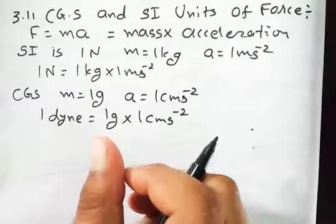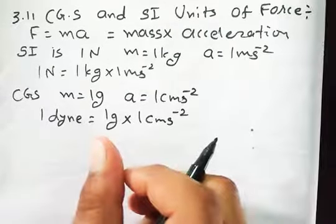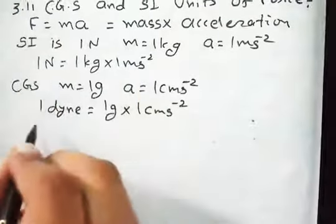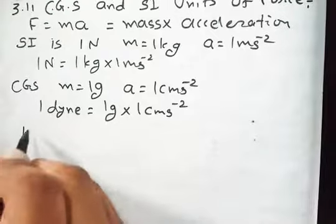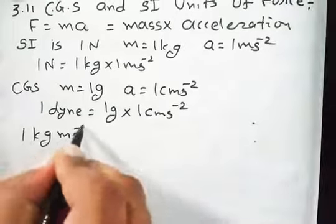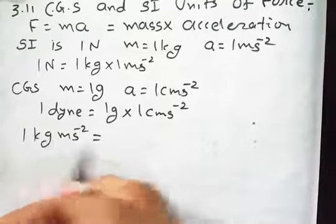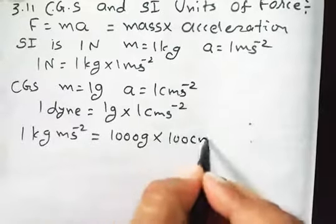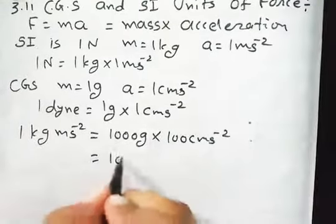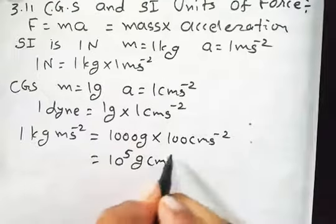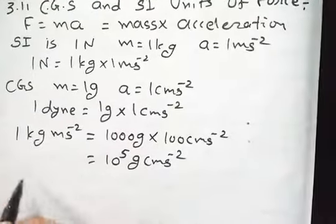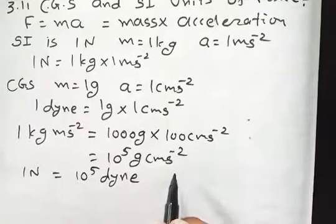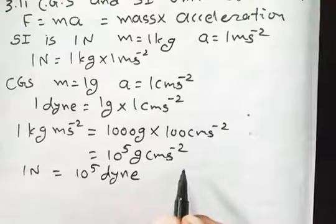Now we are converting the SI units into CGS. We know that in SI, one kilogram meter per second squared equals—I am converting—one kilogram into 1,000 grams and one meter into 100 centimeters per second squared. This equals 10 to the power 5 gram centimeter per second squared. So one Newton equals 10 to the power 5 dyne.